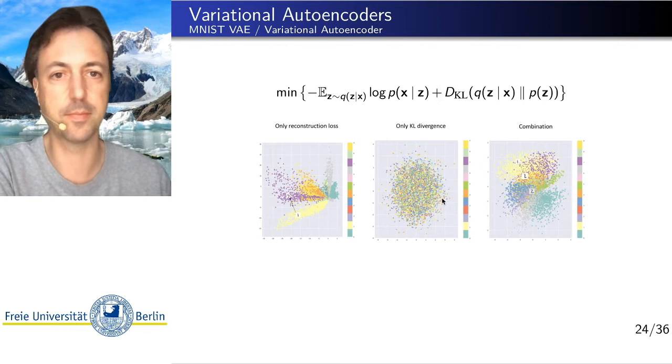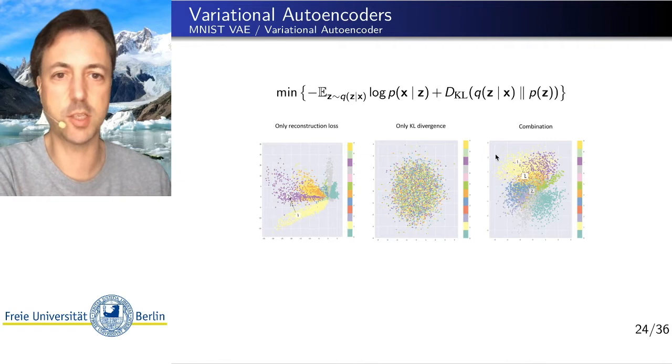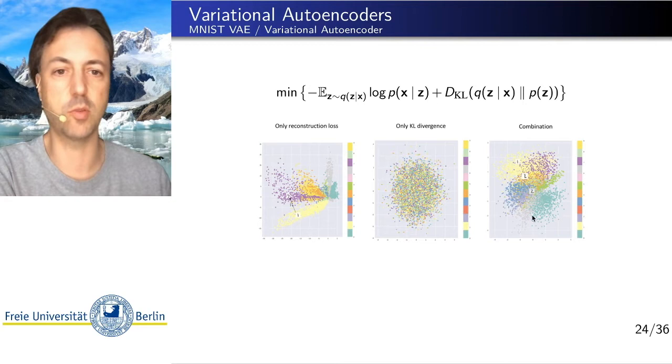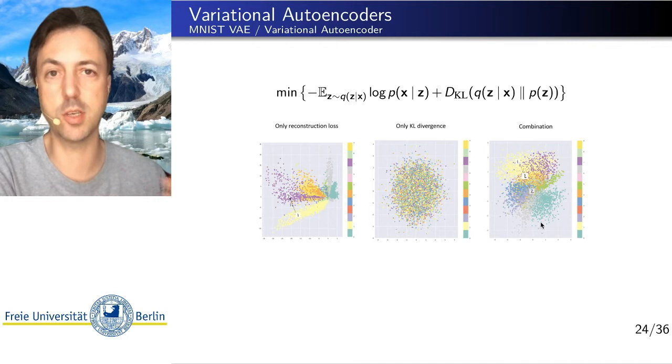So in the combination, we have both. The overall distribution is Gaussian-shaped. The individual conditional distributions are also Gaussian-shaped, because they are these conditional Gaussians conditioned on X.